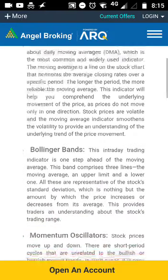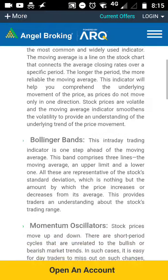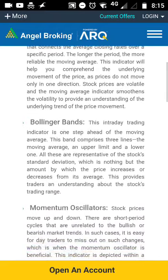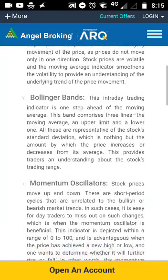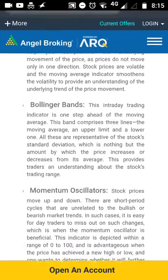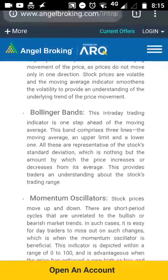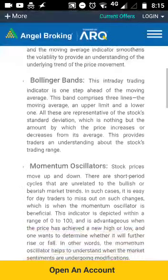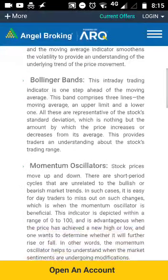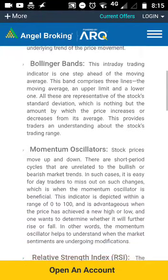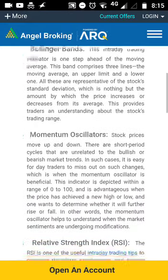The moving average is basically a line on the stock chart that connects the average closing rates over a specific period. The longer the period, the more reliable the moving average. This indicator helps you comprehend the underlying movement of the price, as stock prices can be very volatile, and the moving average helps you understand the trend of the price movement.